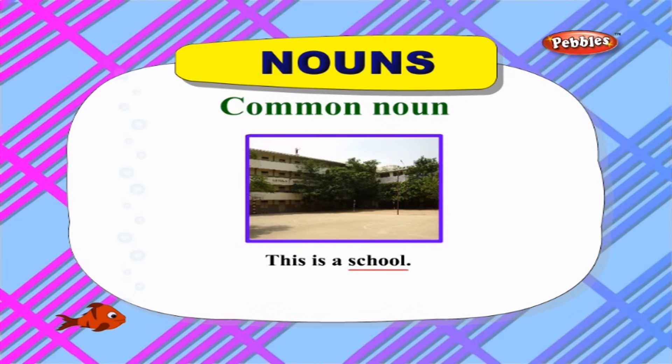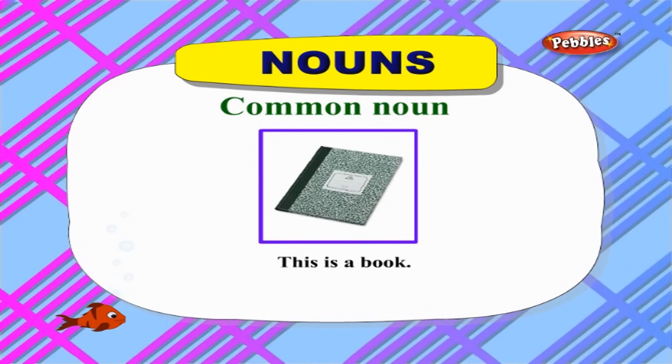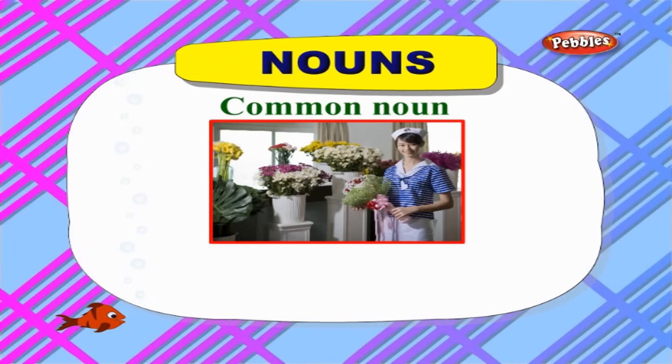'This is a book' — here, book is a common noun. Let us see some examples where a common noun is used based on the work or profession of a person.